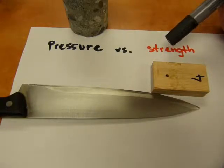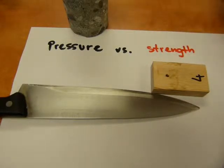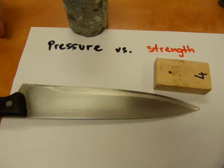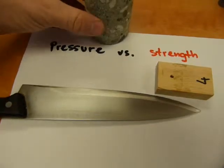Strength is a property of matter. Strength is what the materials have. This wood has a certain strength, steel has strength, concrete has strength.